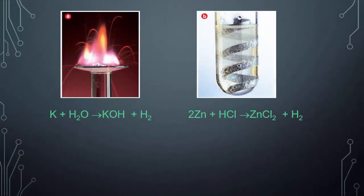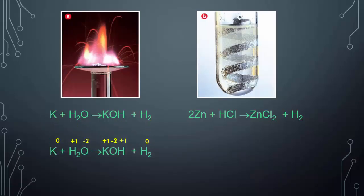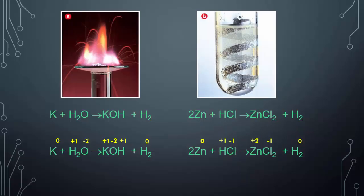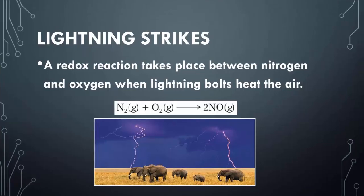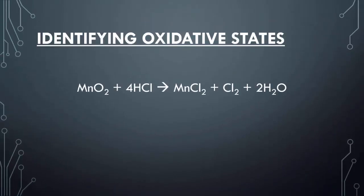Now that we have all the charges, we can determine which ones are oxidizing and reducing, but we want you guys to try this out — pause the video and try both of these examples. When you assign all the oxidation numbers, you should get these values for each element. Remember, if it's a lone element, it has to be zero; if it's in a compound or ionic bond, it has to have some sort of charge. A redox reaction actually takes place in nitrogen and oxygen when lightning bolts hit the air — N2 plus O2 in the atmosphere reacts to form nitrogen monoxide gas.